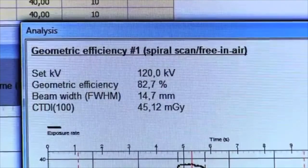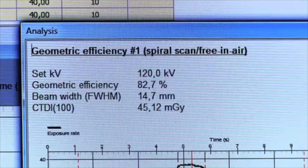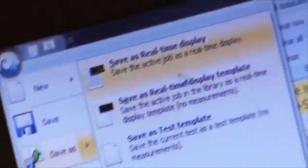The geometric efficiency should be greater than 70% or the CT will issue a warning. The distance between the two black lines is the collimation. Save the data.